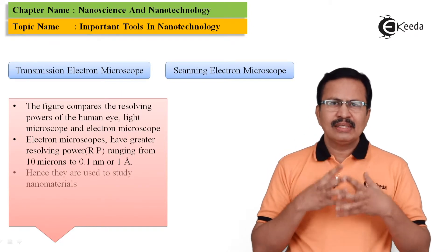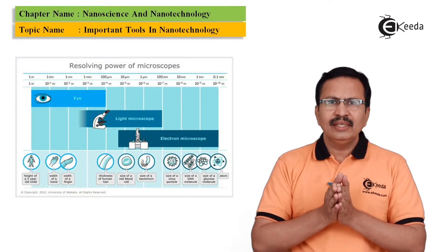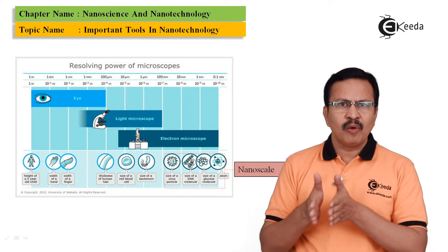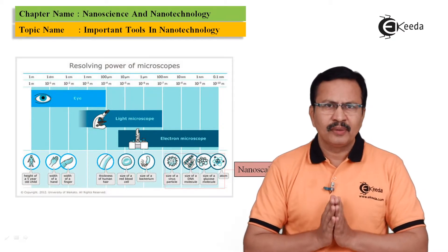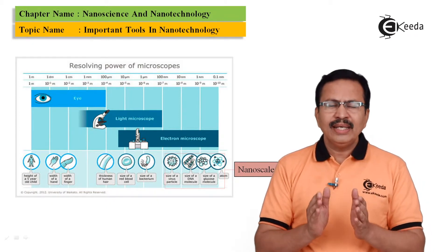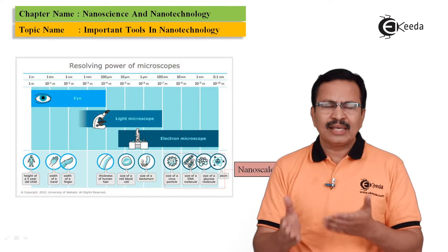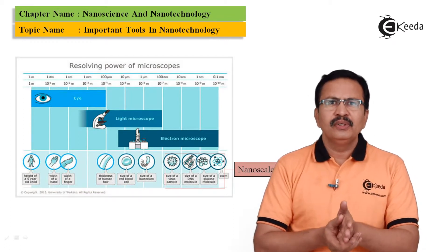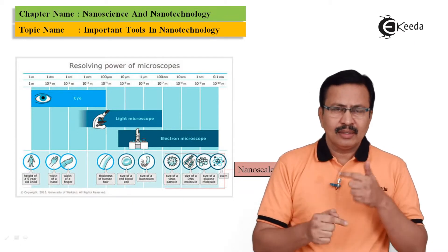Let us understand why the scanning electron microscope or the tunneling electron microscope has a better resolving power — a better seeing power — compared to an optical microscope or even the human eye. As you can see in this slide, electron microscopes can see right up to a range from a few microns down to around 0.1 angstrom, which means we can go right into the nano range in order to study nanomaterials.